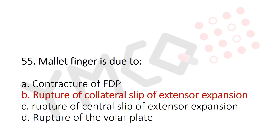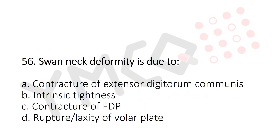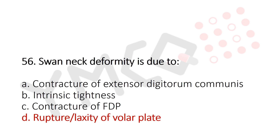Question 56: Swan neck deformity is due to — Option A: contracture of extensor expansion, Option B: eccentric tightness, Option C: contracture of FDP, Option D: rupture or laxity of volar plate. The answer is Option D, rupture or laxity of volar plate.